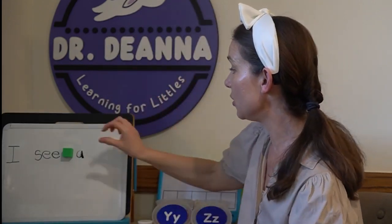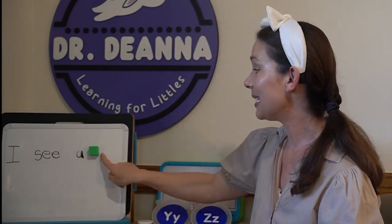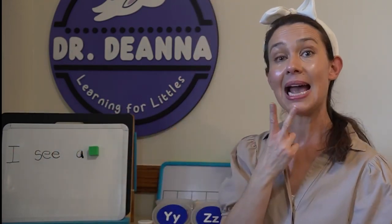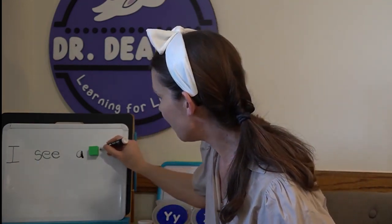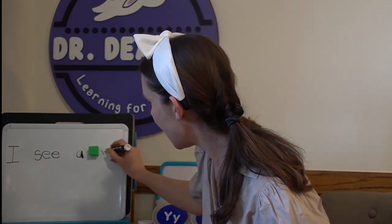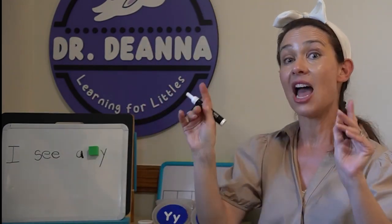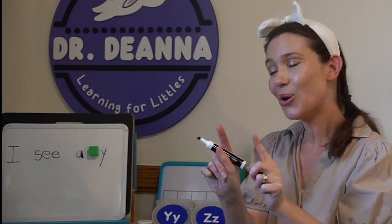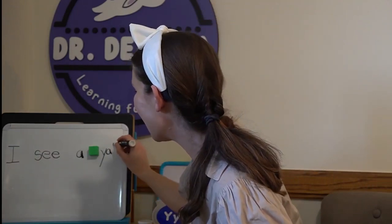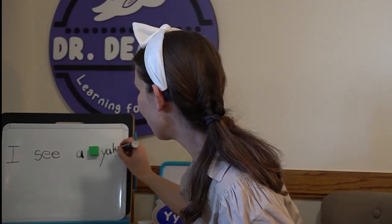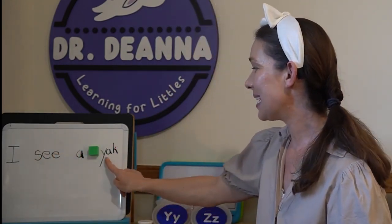I see a. A is another word that just has one letter in it. I'm going to use my cube to put spaces between my words. I see a yak. I heard the Y sound at the beginning and I know that's the sound that goes with the letter Y. Stretch it out. I hear the short A. And the letter K is at the end. It is breaking our CK rule, but that's okay.